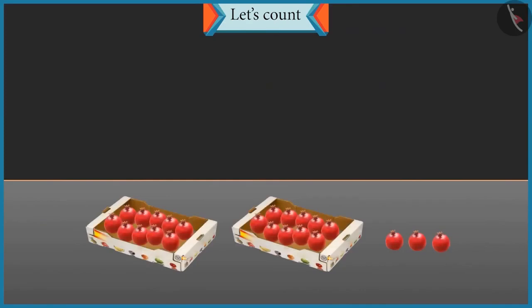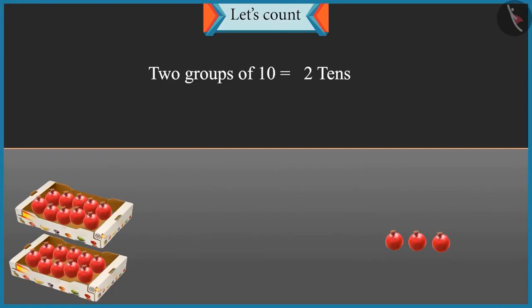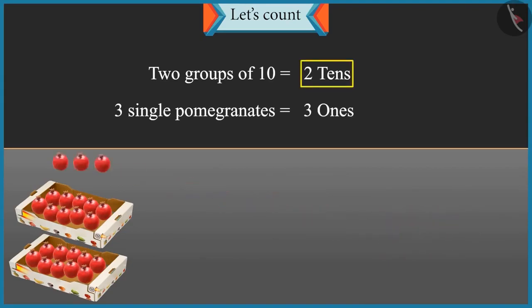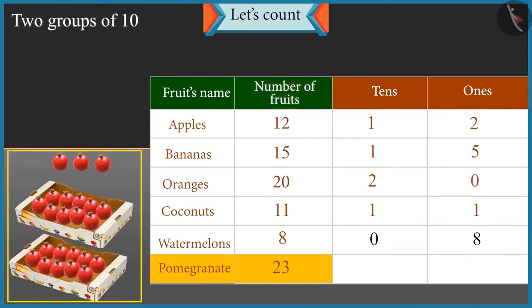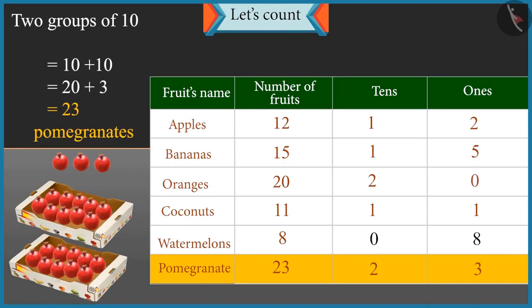Chotu, I have counted the pomegranates and placed them in groups of tens. Can you tell me how many pomegranates are there? Uncle, there are two groups of tens — that means two tens — and three single pomegranates, that means three ones. So ten and ten is twenty, and there are three more pomegranates: twenty-one, twenty-two and twenty-three. There are twenty-three pomegranates.